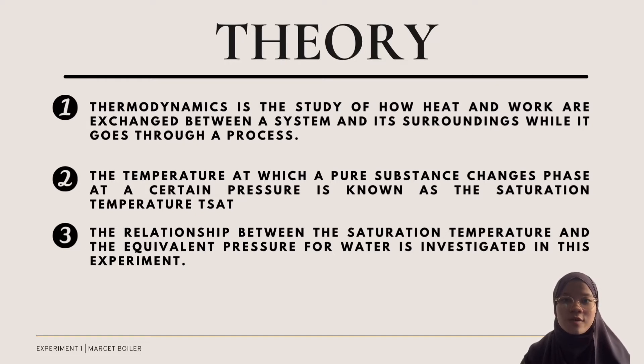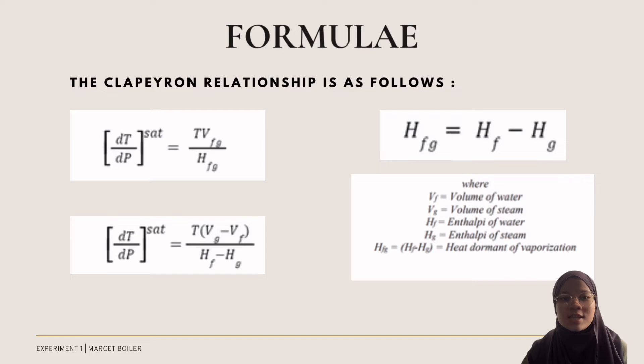The Clapeyron relationship relates the pressure, heat, and expansion during a phase change for a pure substance that exists as a mixture of two phases, assuming that the two phases are in equilibrium. As we can see in the slide, the Clapeyron equation is as follows: dT/dP equals T times Vfg divided by Hfg. And also, we can use the equation for heat of vaporization, where Hfg equals enthalpy of fluid minus enthalpy of steam.